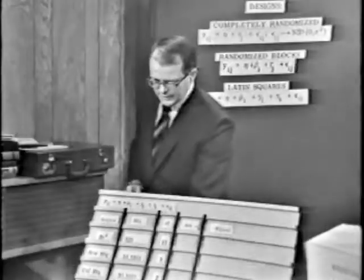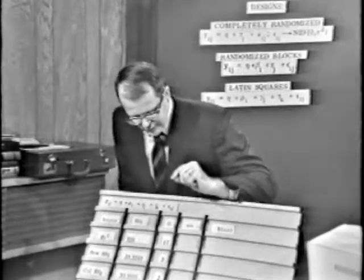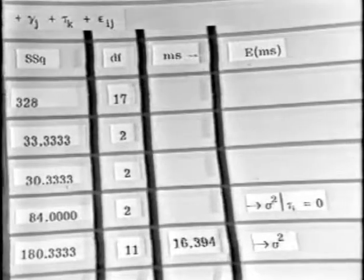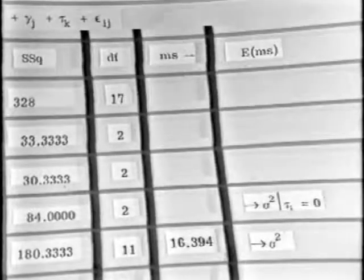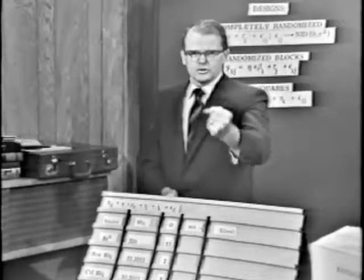And now I can quickly go ahead and estimate my variance. My estimate of the variance is now equal to sixteen point three nine four. That's an estimate of sigma squared, the intrinsic variability. You know, enter stage left, somebody claiming there are no differences between those treatment effects. The treatment effects are all zero. And you say, well, okay,